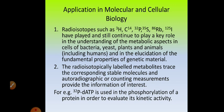Let us discuss the application of tracer technique in molecular and cellular biology. Radioisotopes like H-3 (tritium), C-14, P-32, S-35, rubidium-86, and iodine-125 have played and continue to play an important role in understanding the metabolic aspects — metabolic pathways operating in bacteria, yeast, plants, animals including humans — and also in the elucidation of fundamental properties of genetic material.